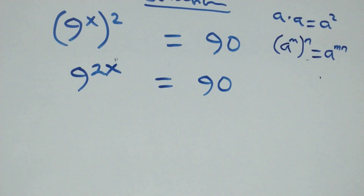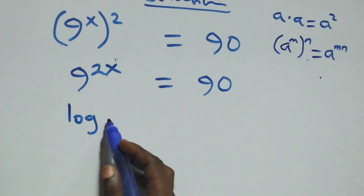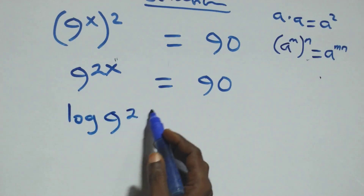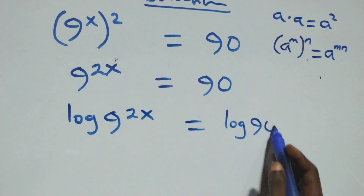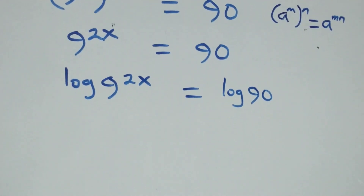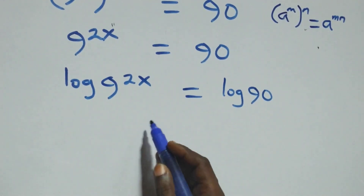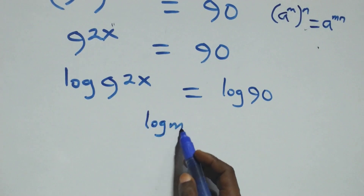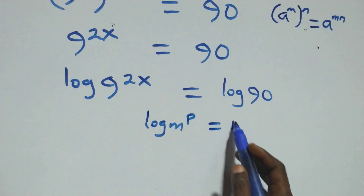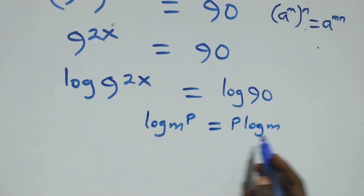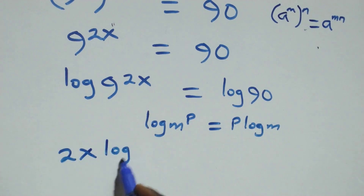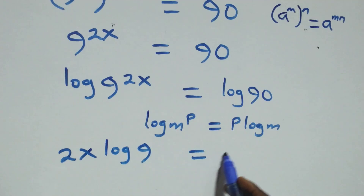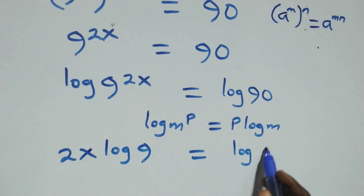Then, next step here, we take the log on both sides. At this we have log of 9 raised to power 2x equals to log 90 on this side. And from here, we apply the power law of logarithms. When we have log m raised to power p, this is the same thing as p·log m. So this becomes 2x·log 9 equals to log 90 from here.